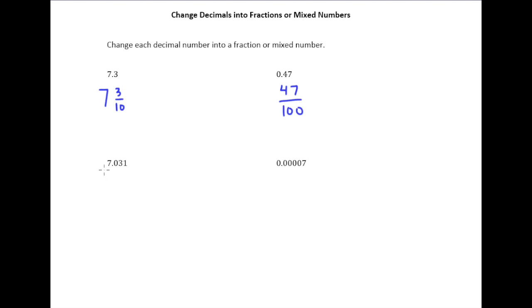Alright, so this one is slightly more challenging. We do have a whole part, so we have 7 and, now let's say this correctly. Here we have tenths, hundredths, it ends in the thousandths place. So to say this correctly, you'd say 7 and 31 thousandths.